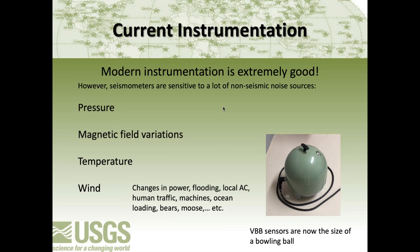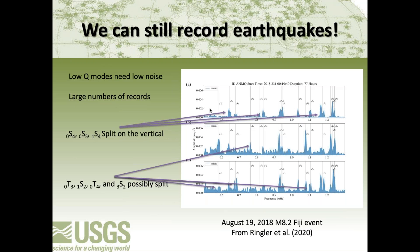We can still record some very interesting signals on these instruments. What I'm showing here is normal mode spectra from a magnitude 8.2 event. These little peaks are the oscillations of the Earth after an event, and some of them are starting to split — where amplitude changes because of the heterogeneities of the Earth. We have the vertical and two horizontals from ANMO for the 2018 magnitude 8.2 event. It's incredible that these instruments record things at such low frequencies.